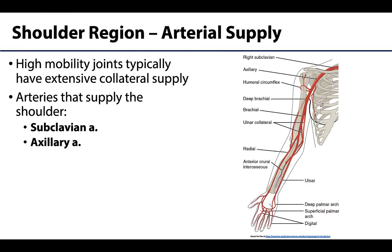Having complex but more importantly robust arterial supply can be a benefit in joint regions, as there is mobility and certain movements may even cause temporary occlusion to an arterial branch. Most joints will have rich arterial supply and comparatively higher frequencies of anastomoses or communication between arteries to ensure adequate blood supply no matter what movement occurs. While we won't discuss the arterial anastomoses for each joint, we do want to touch on the arterial anastomoses around the shoulder region.